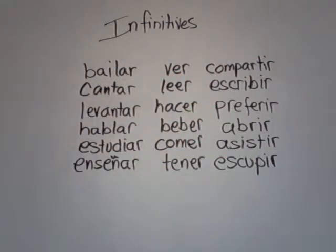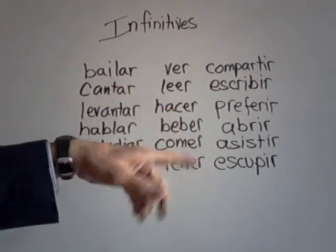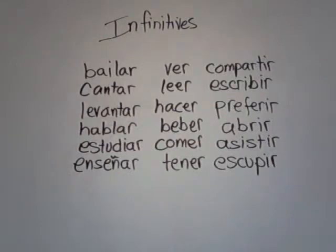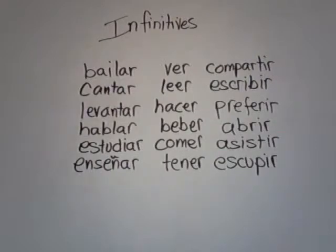Preferir — to prefer. Here are three more to round out the list: abrir — to open; asistir — to attend, like to attend a class; and escupir — to spit. All of these are not conjugated yet and they end in AR, ER, or IR. We can use these with the verb IR to tell what we're going to do.